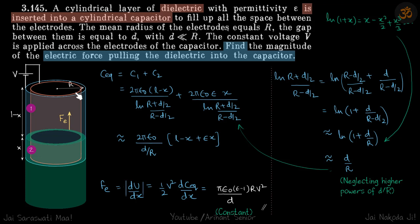Now we'll do ½CV², and V is constant. Electric force will be dU/dX = ½V² × dC_equivalent/dX. It's a linear function, so this simply becomes this constant, which is our answer.